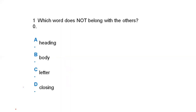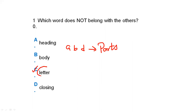Which word does not belong with the others? Option A is heading, option B is body, option C is letter, and option D is closing. Options A, B, and D are all parts of a letter. But option C, 'letter', shows the letter as a whole. These three are parts of a letter, so the one that is different in the classification is option C. Our answer is option C, letter.